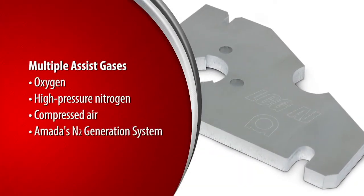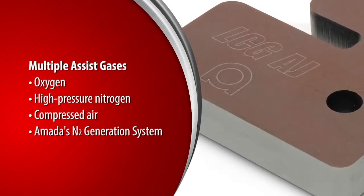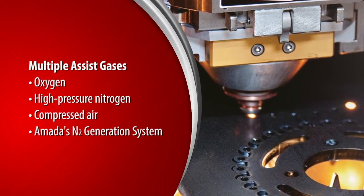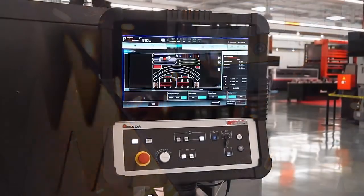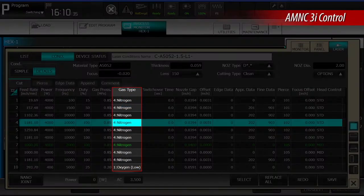Multiple assist gases including oxygen, high-pressure nitrogen, compressed air, and one of Amada's nitrogen generation systems can be connected to the machine at the same time. The machine's control will select the gas based on the cut condition selected for processing.